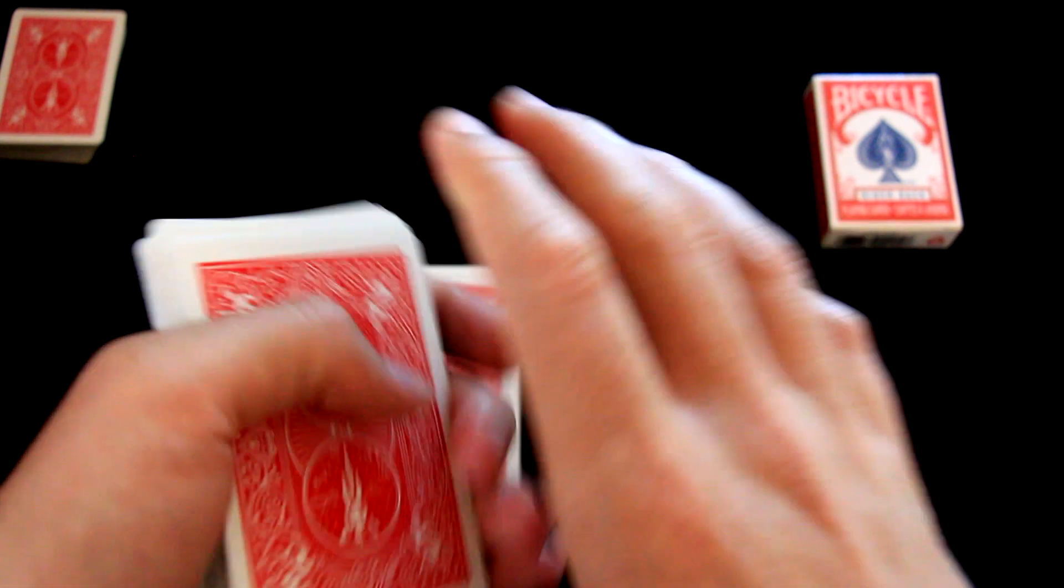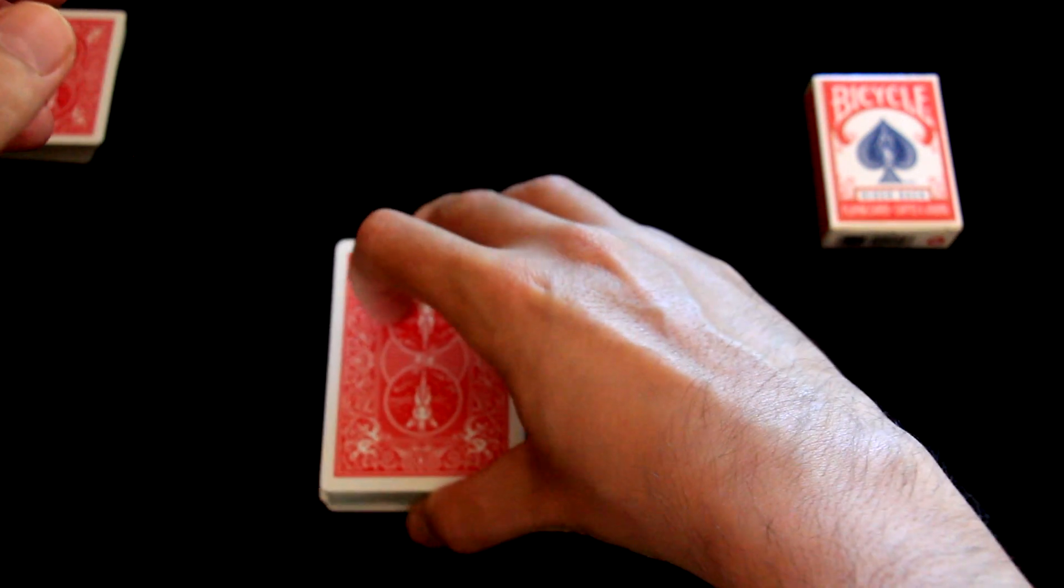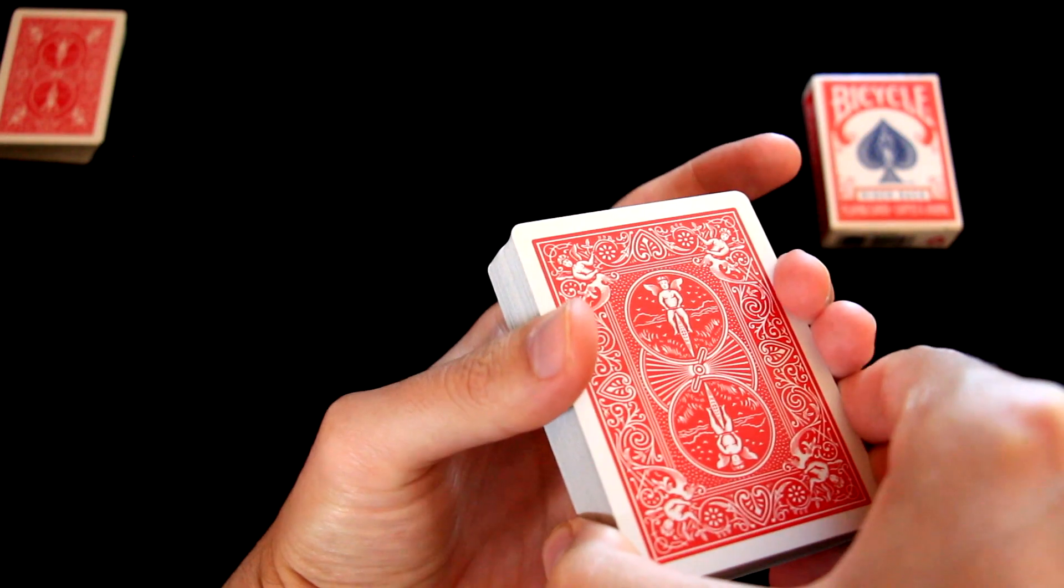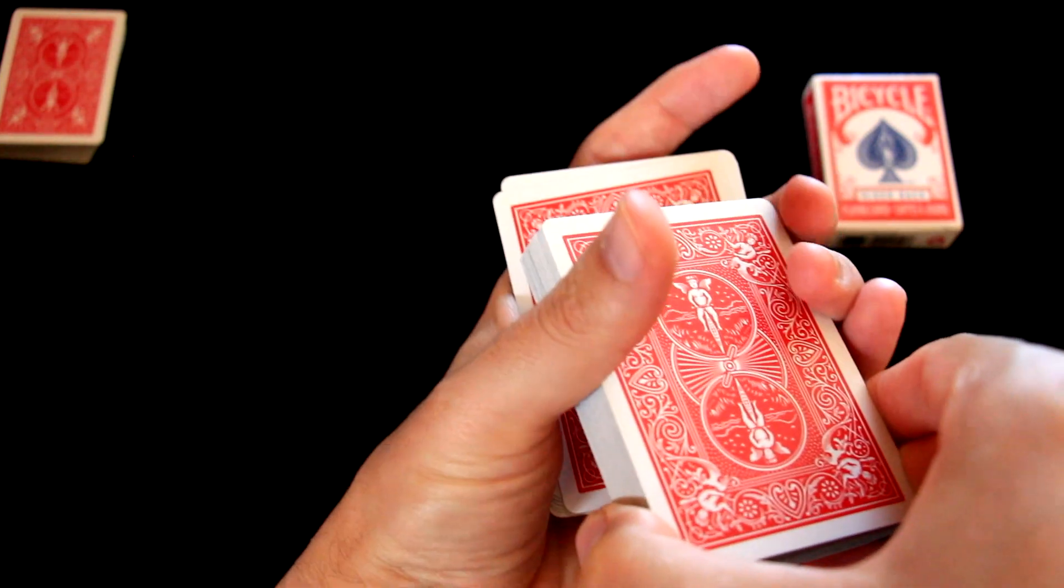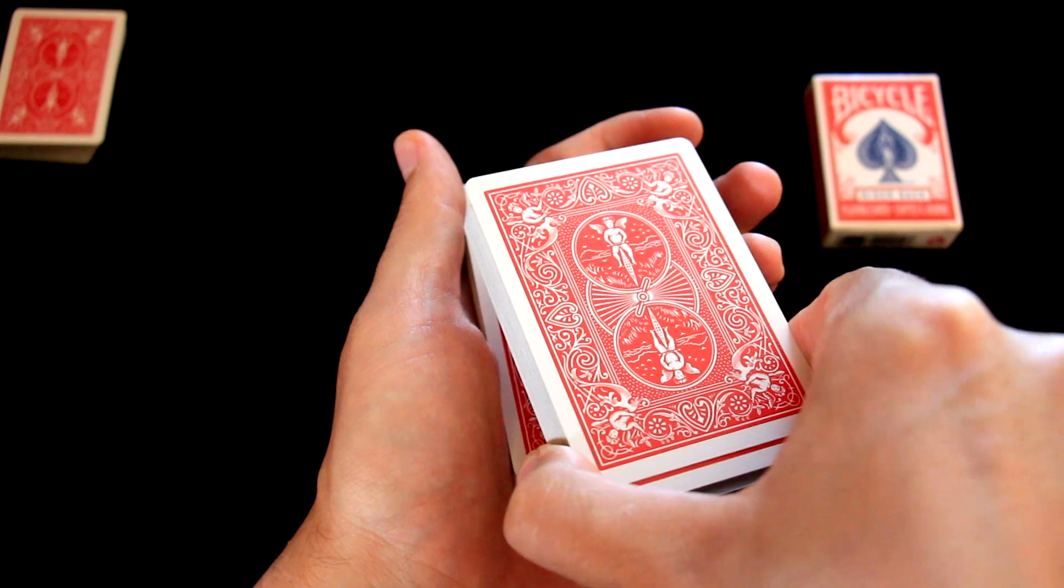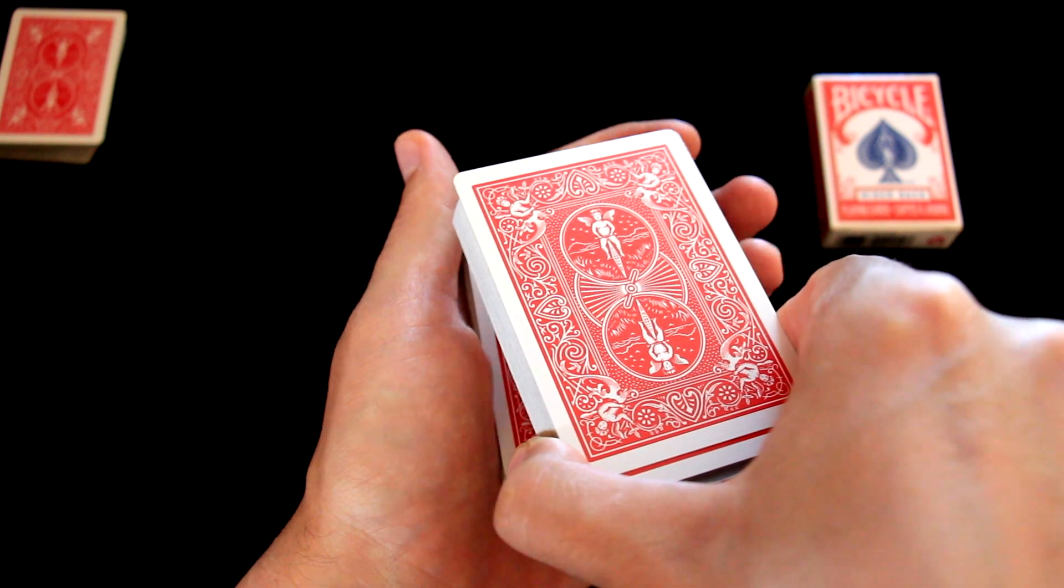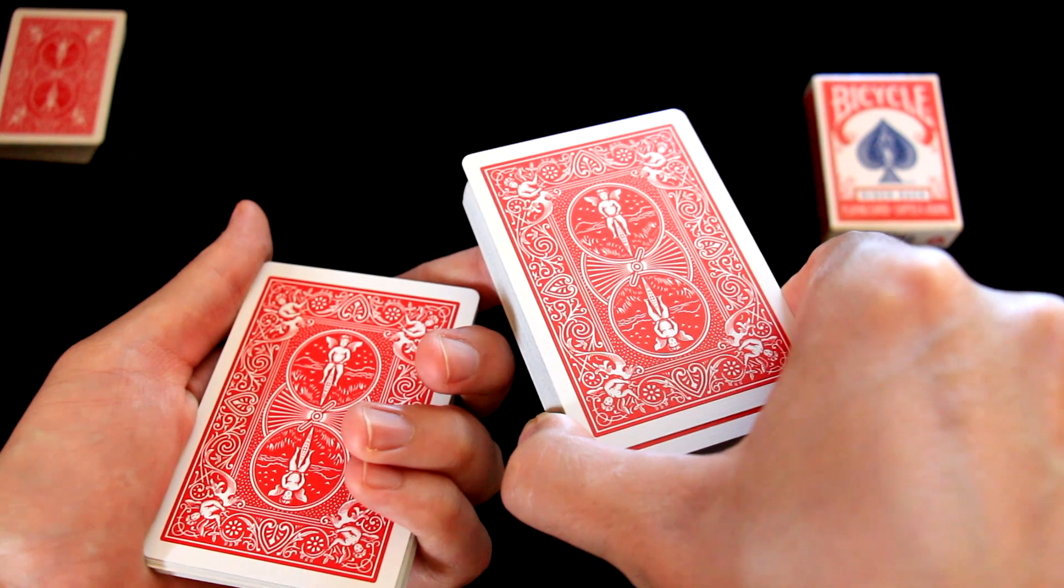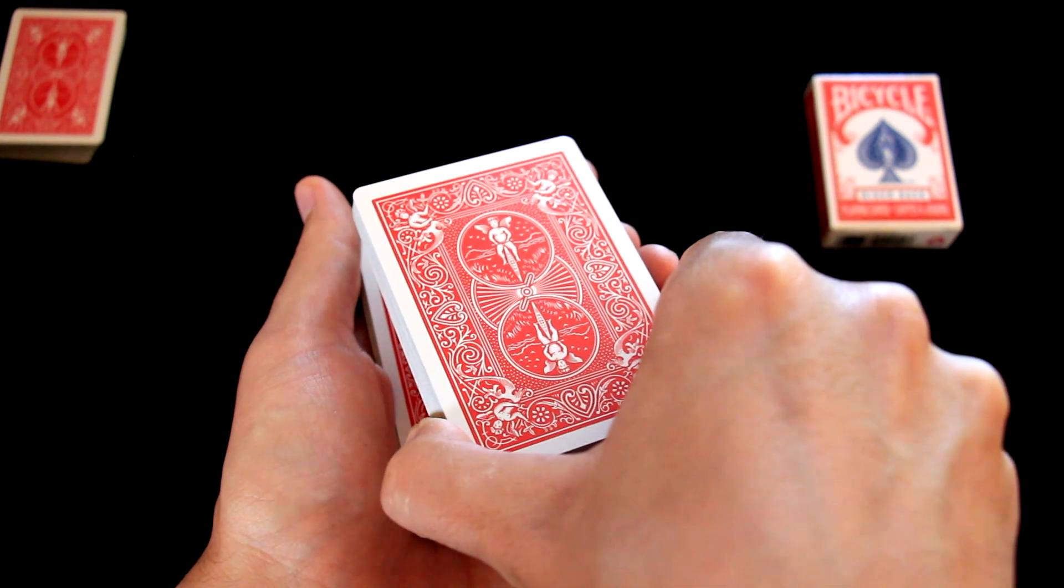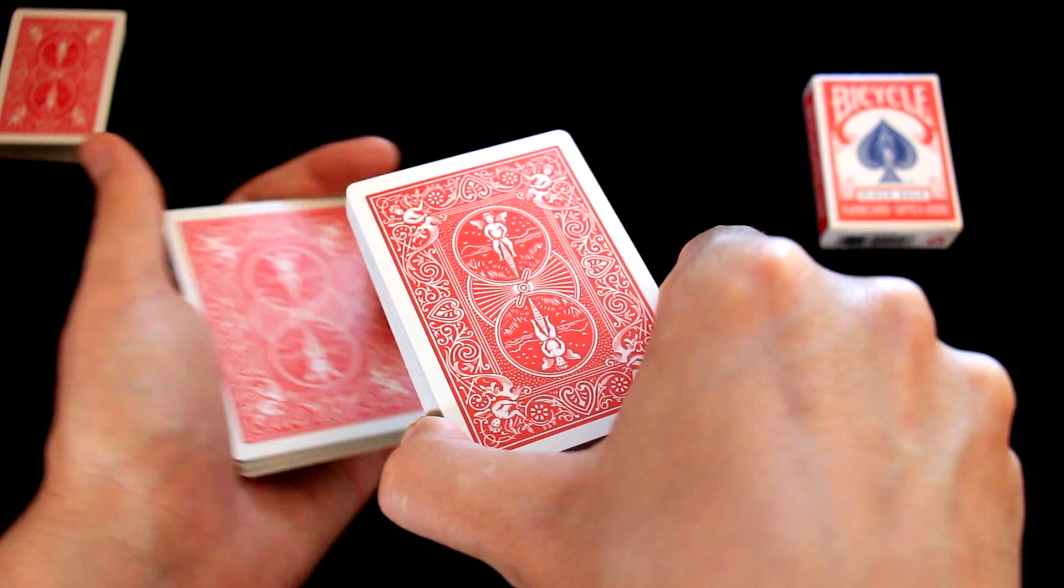The rest of the deck will be placed on top. Now we will ask the spectator to say stop any time he wants. So we will be taking blocks of cards like this, and it doesn't matter when the spectator will stop us because at any time we will be showing him the bottom card that we prepared. Let's say he will stop us here and we will stop and we will show him his selection.